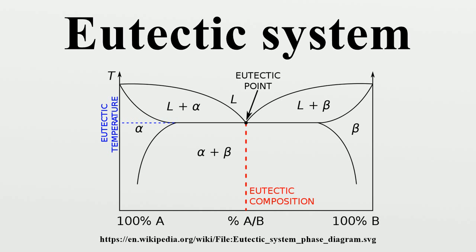Peratectoid: A peratectoid transformation is a type of isothermal reversible reaction that has two solid phases reacting with each other upon cooling of a binary, ternary, or n-ary alloy to create a completely different and single solid phase. The reaction plays a key role in the order and decomposition of quasi-crystalline phases in several alloy types.